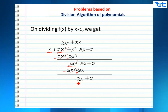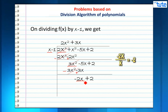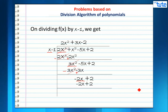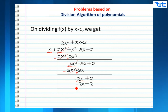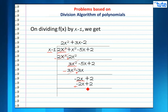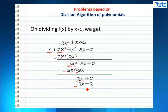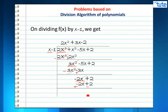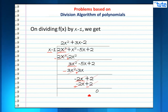The first term in this expression is -2x. Dividing -2x by x, we get -2. Multiplying -2 by the divisor x - 1, we get -2x + 2. Subtracting it from our expression, minus minus becomes plus, so -2x + 2x cancel to 0 and +2 becomes -2, which cancels with 2 to give 0. The remainder is 0.